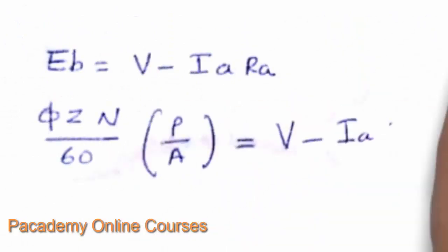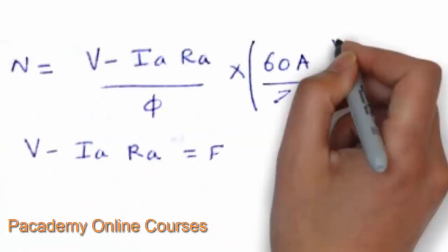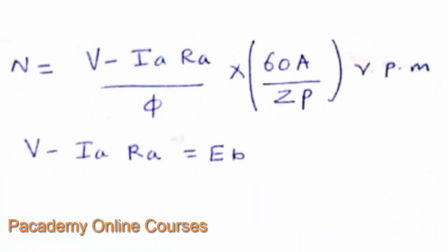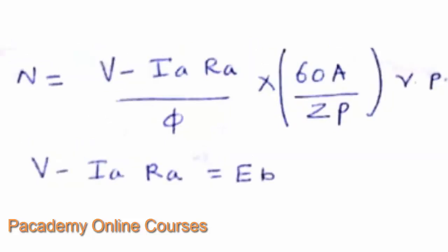The back EMF of an electric motor can be written as E_B = V − I_A·R_A. Using the generator EMF equation, back EMF is also equal to φZN/60 × (P/A). Equating both expressions gives the speed equation: N = (V − I_A·R_A) / φ × (60A / ZP).